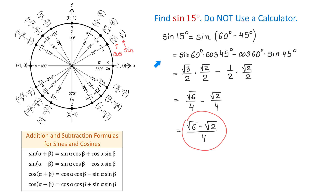So here we found the value of sine of 15 degrees, and it is square root of 6 minus square root of 2 over 4. I hope all the steps made sense and I would be glad to read your comments. Thank you for watching.